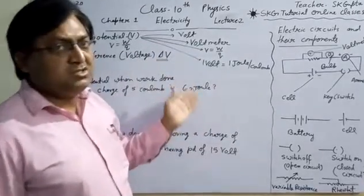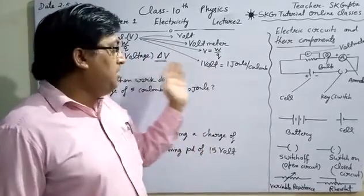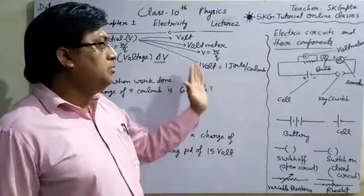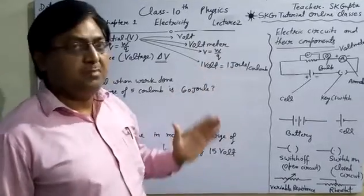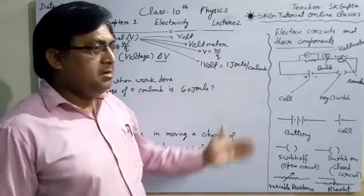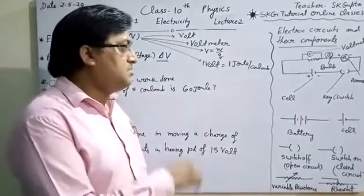Formula of electric potential is V is equal to W upon Q. We can also use one volt is equal to one joule per coulomb, because one joule of work has to be done for bringing one coulomb of charge from infinity to any point in the circuit.